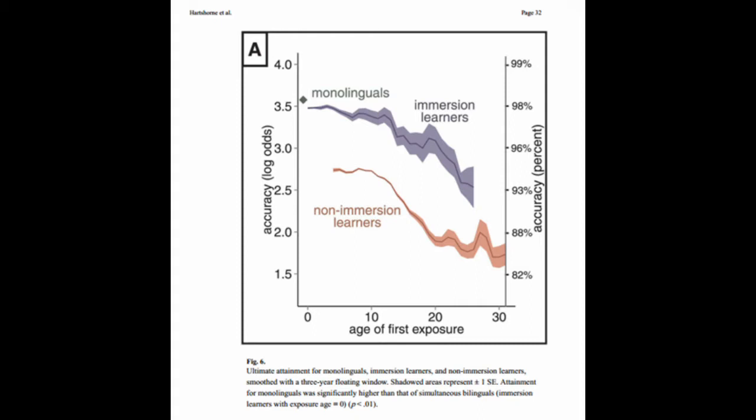'Second, we found that ultimate attainment — that is, the level of asymptotic performance — is fairly consistent for learners who begin prior to 10 or 12 years of age. We found no evidence that the ultimate attainment curve reaches a floor at or around puberty as has been previously proposed, like in Johnson and Newport 1989.' So there's a lot of math in this one, but I think it's really interesting.